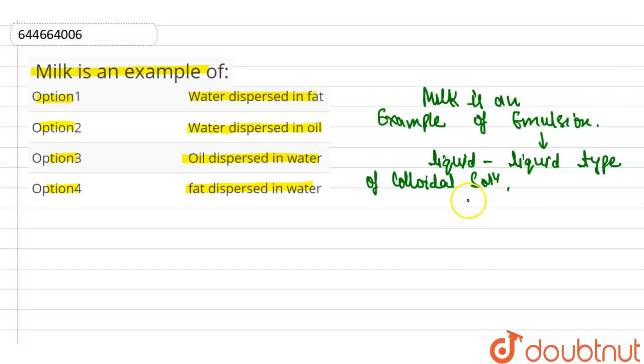So therefore, dispersed phase is liquid and dispersed medium is also liquid.